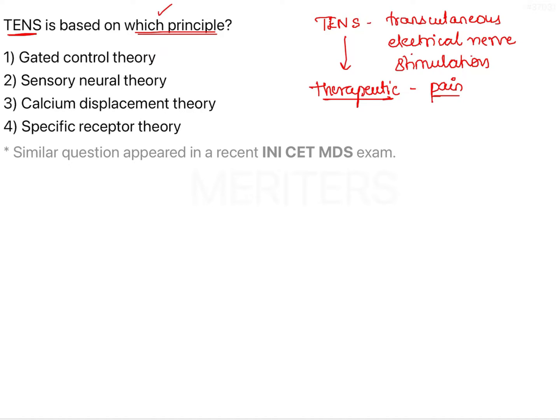The various options are: Gate Control Theory, Sensory Neural Theory, Plagium Displacement Theory, and Specific Receptor Theory.